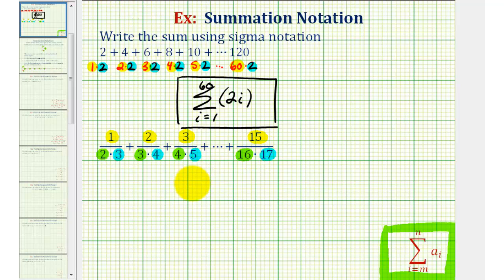Which means we can write this sum using sigma notation using the formula i for the numerator. And then for the denominator, since the green factor or the first factor is always one larger than the numerator, we can write the first factor as i plus one.